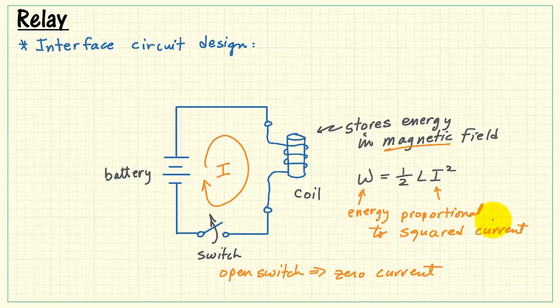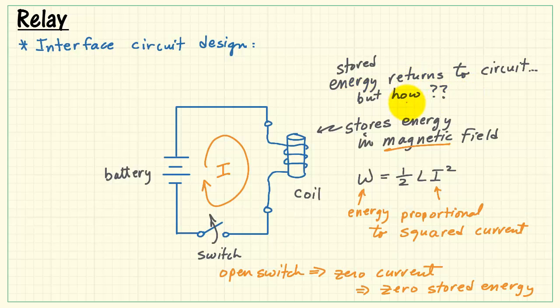But zero current would mean that we have zero energy in the coil, because the switch current and the coil current are the same thing. Somehow we need to get this stored energy in the magnetic field to go away. Well, it will return to the circuit somehow, but the question is, how does that actually happen?